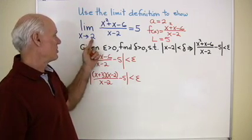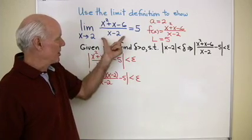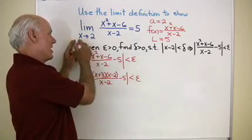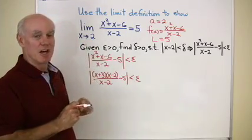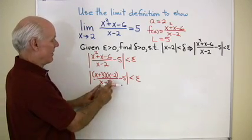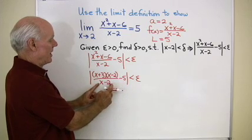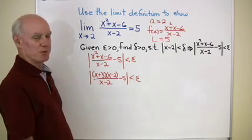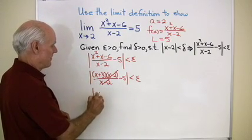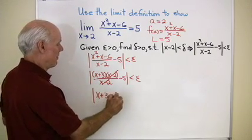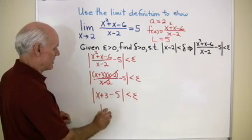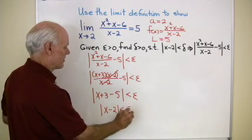and I can do that as long as x is not 2. Well, remember we said as x goes to a in this limit expression right here, that x is never a. That's one of the things about limits. The limit as x goes to 2, in this case, one of the things we know about x is that it's never going to be 2. So that means I can divide the numerator and denominator of this expression by x - 2, because I know x will never be 2, so I'll never be dividing by 0. Okay, so I end up with |x + 3 - 5| < epsilon, and then x + 3 - 5 is x - 2, so |x - 2| < epsilon.